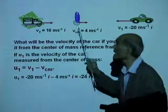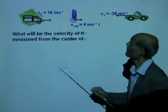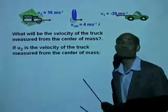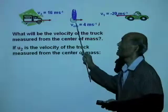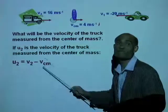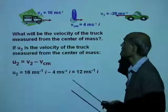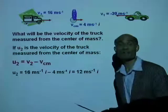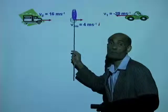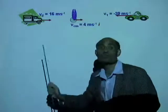What is the velocity of the truck relative to the center of mass? If U2 is the velocity of the truck measured from the center of mass, then U2 equals V2 minus V_cm. V2 is 16 m/s î minus 4 m/s î, giving 12 m/s î. That means when you measure the velocity of the truck from the center of mass reference frame, the truck appears to go east at 12 meters per second.